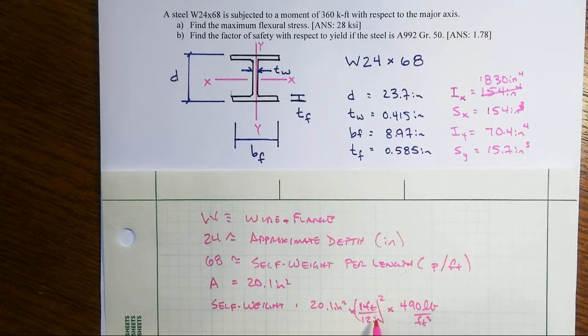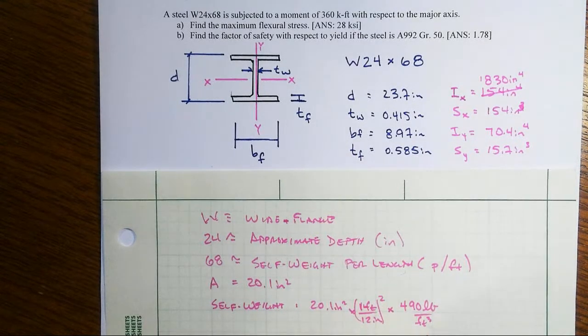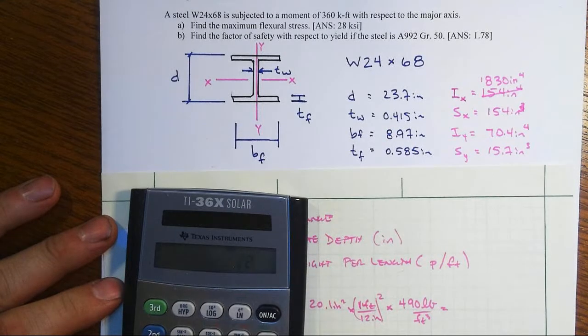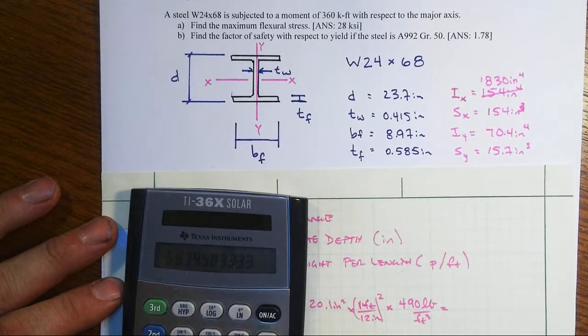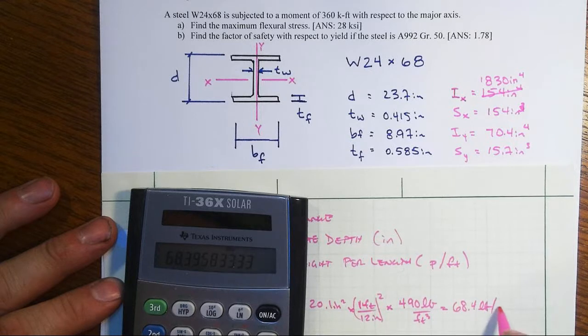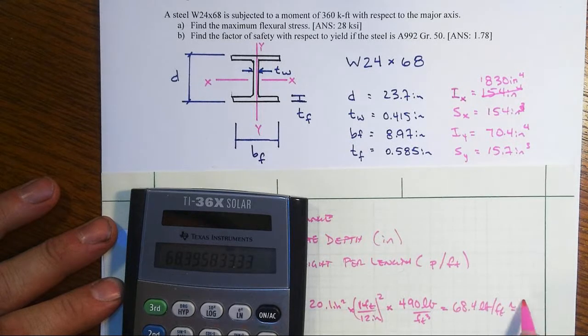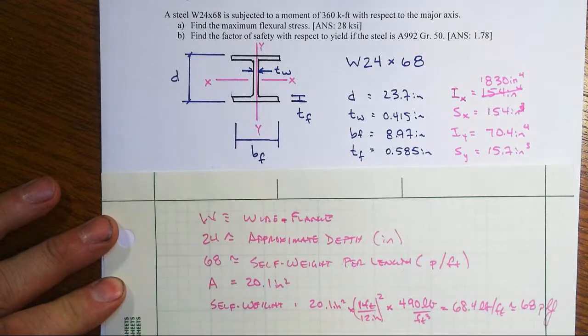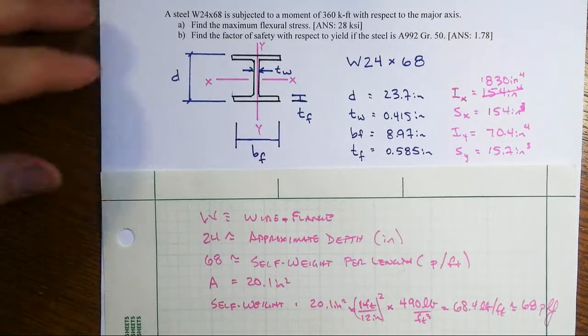So the inch squares goes away. We're left with feet squared. And then feet squared over feet cubed means that we have the self-weight per foot. And so let's check it out. 20.1 divided by 144 times 490 then would be about 68.4 pounds per foot or approximately 68 PLF pounds per lineal foot for that self-weight.